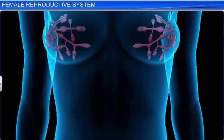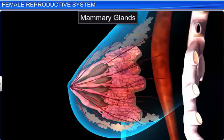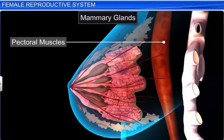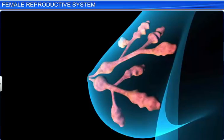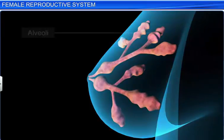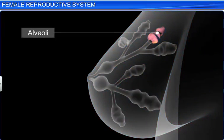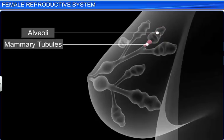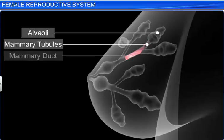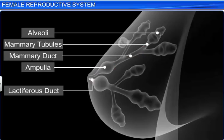The female reproductive system is supported by the mammary glands. The mammary glands, or breasts, are modified sweat glands that lie over the pectoral muscles. They contain glandular tissues and a variable amount of fat. Internally, each breast is divided into 15 to 20 mammary lobes containing clusters of cells called the alveoli. The alveoli open into the mammary tubules. The tubules of each lobe join to form the mammary duct. Several ducts join to form a wider ampulla, which is connected to the lactiferous duct. The lactiferous duct opens out through the nipple, from which milk is sucked out.